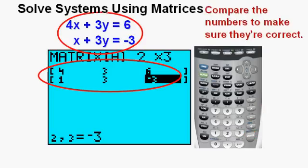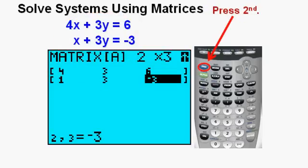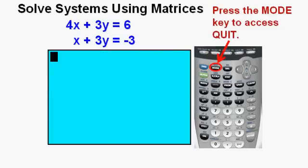Now we compare the numbers in the matrix to those in the system of equations to make sure they are all correct. And seeing that they are, we clear the screen by pressing second, then the mode key right next to it, which gives you quit.